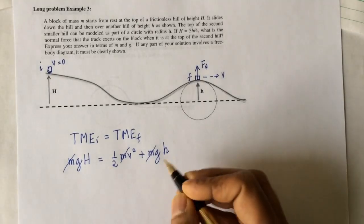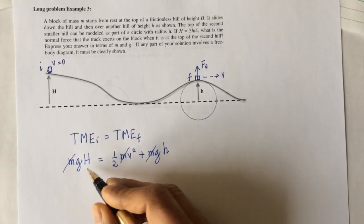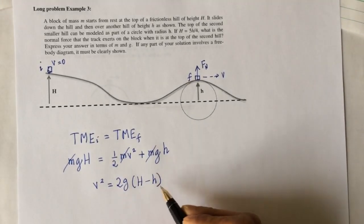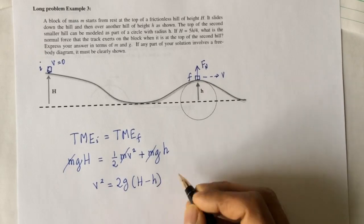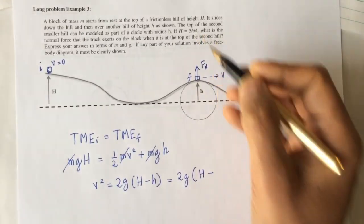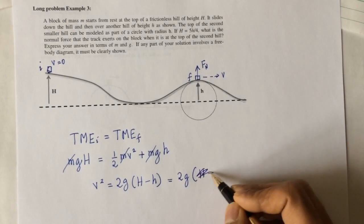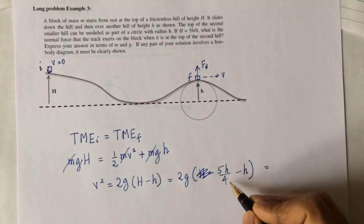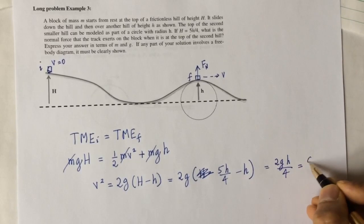Notice that the mass cancels out, so we can find the speed. v squared equals g times (H minus h) times 2. I'll leave it as v squared — you'll soon see why I don't bother solving for v. Substituting capital H = 5h/4: that's 2g times (5/4 minus 1), which is 2g times 1/4, giving v squared = gh/2.